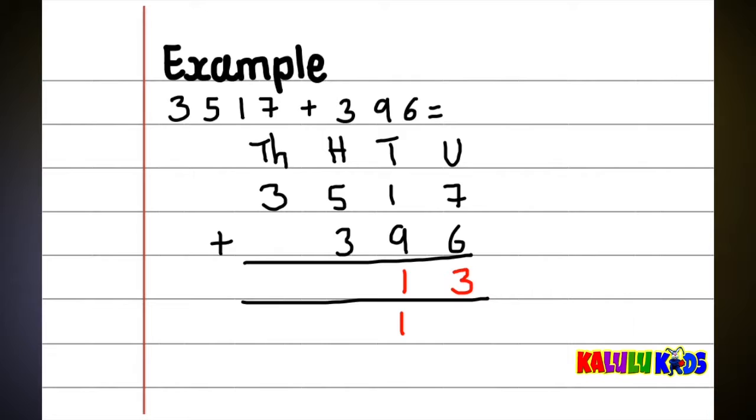So, you then say 5 plus 3. You get 8. Then, you add the 1 that you carried from the tens column. That will make it 9. Finally, 3 plus nothing, the answer will be 3. So, your answer is 3,913.